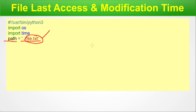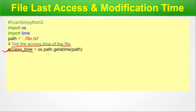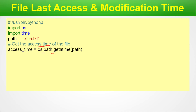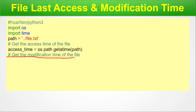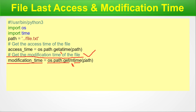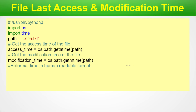We also import the time module. Next we define the path — dot dot slash file.txt — a physical file on your disk. To get the access time, we use os.path.getatime(path). For modification time, we use os.path.getmtime(path). Then we reformat both into human-readable format using time.ctime(access_time) and time.ctime(modification_time).